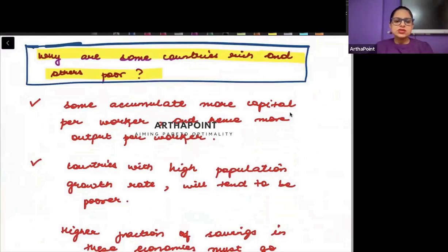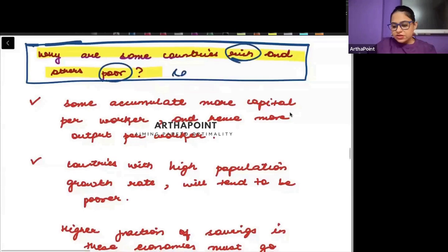We have already tried to answer this question a bit. We know that richness and poorness depend on the savings rate and the population growth rate.